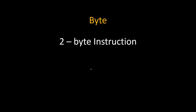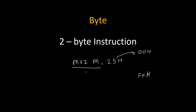How many bytes is this instruction? It is a 2-byte instruction. This instruction will look like MBI M, and the data will be any 2-digit number — say 25H. Data can be any number between 00H and FFH. MBI M takes the first byte of the instruction, and 25H takes the second byte. That's why this is a 2-byte instruction. Simply remember: if a 2-digit number is given in the instruction, then it is a 2-byte instruction.